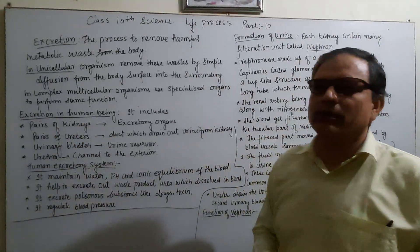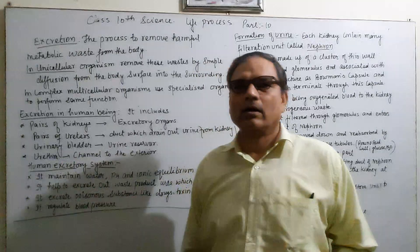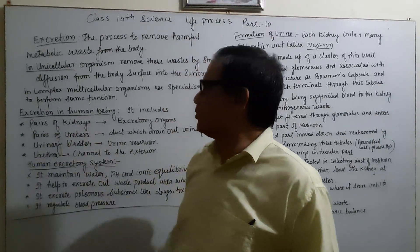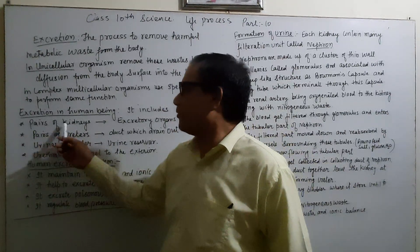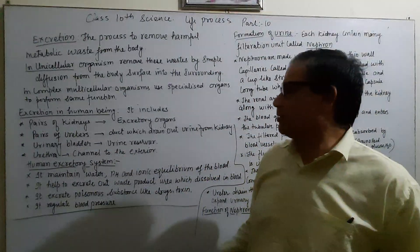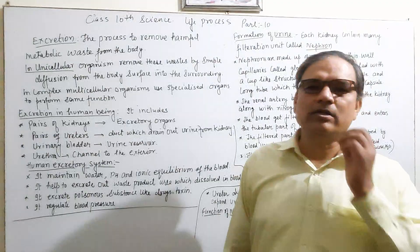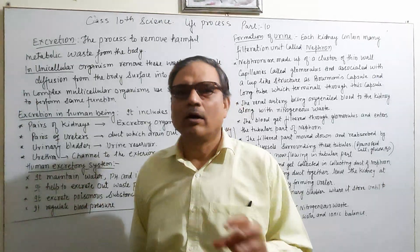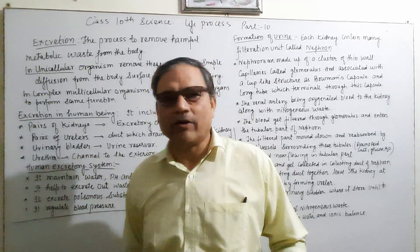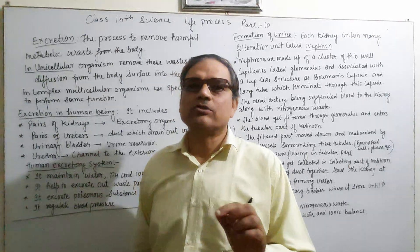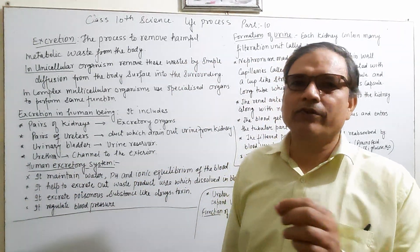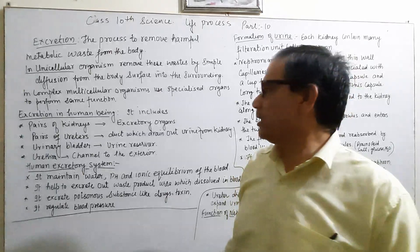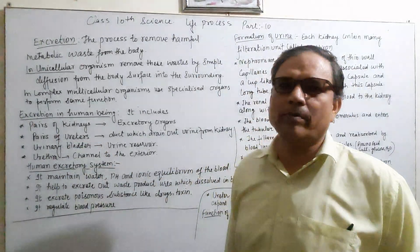Now we will discuss excretion in human beings — the different organs involved. The first is the pair of kidneys. The kidney is the excretory organ which removes waste material in liquid form. Waste dissolved in the blood, including nitrogenous waste carried in oxygenated blood flowing through the body, is filtered by the kidney.